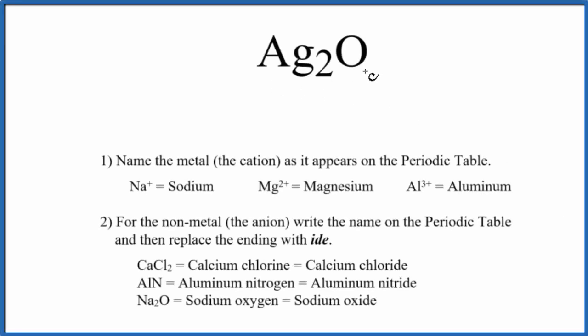To write the name for Ag2O we first have to think about what type of compound we have here. For Ag2O we have a metal and a nonmetal so we're going to name this as an ionic compound. To do that we first write the name of the metal as it appears on the periodic table.